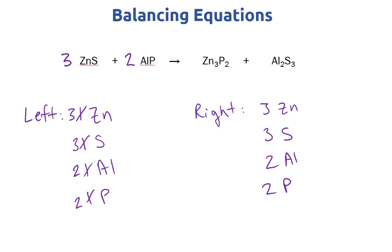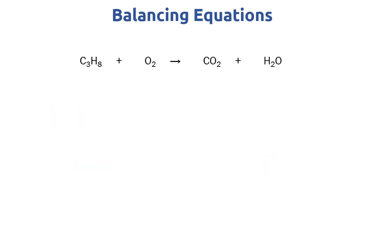Now let's try another example that is a little bit trickier. We have C3H8 reacting with O2 to make CO2 and H2O. In the last example, we really could have started with any of the elements first. While there's no wrong way to approach this problem, we can make it easier on ourselves by choosing to start with certain elements first. Before we decide that, let's count everything on both sides — that's something we do first for any balancing problem.